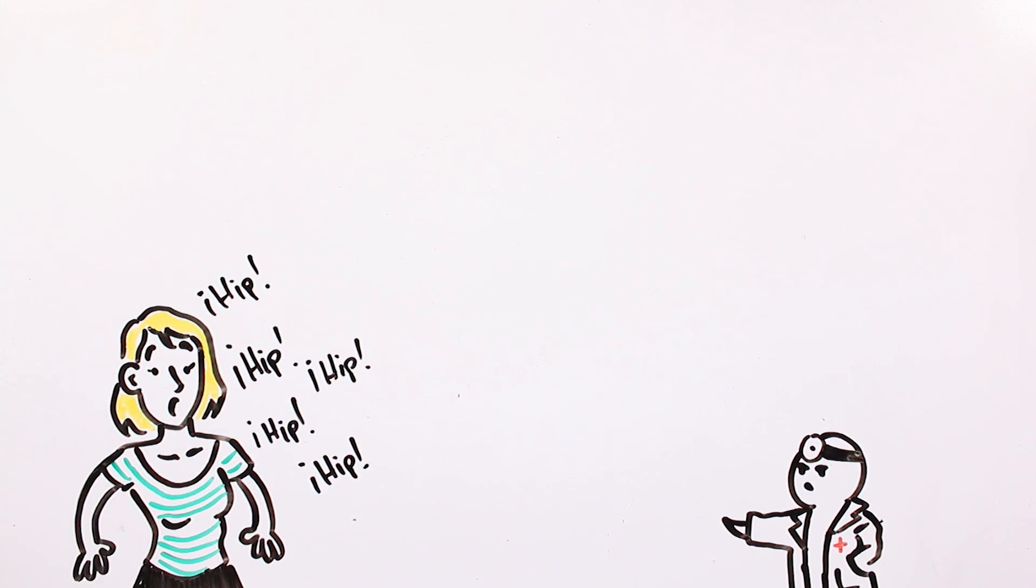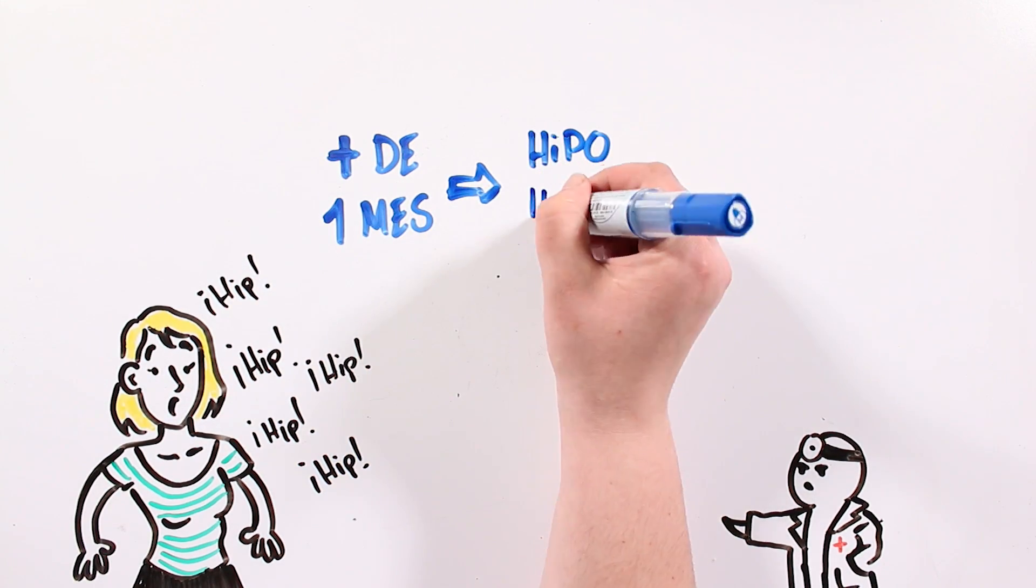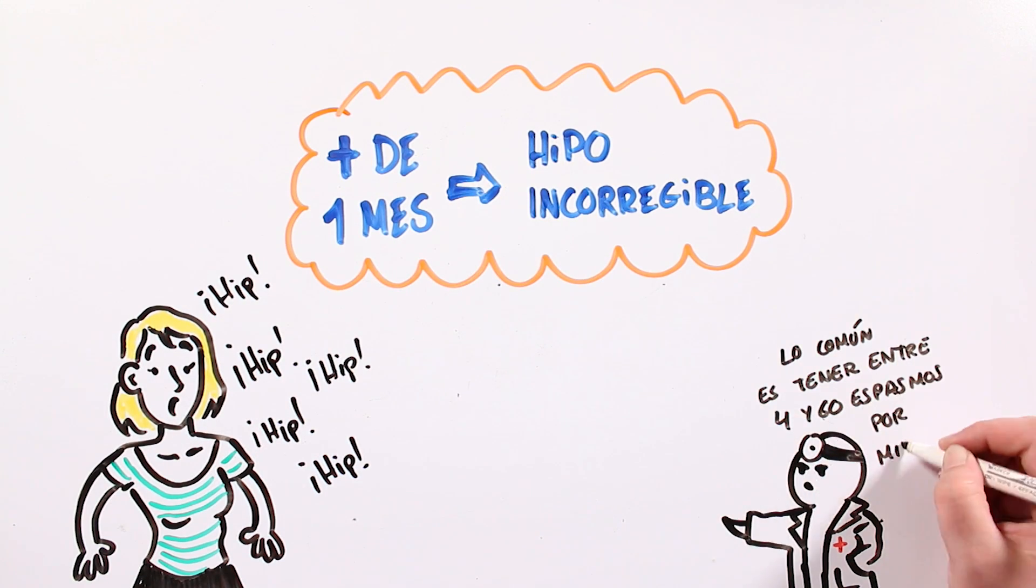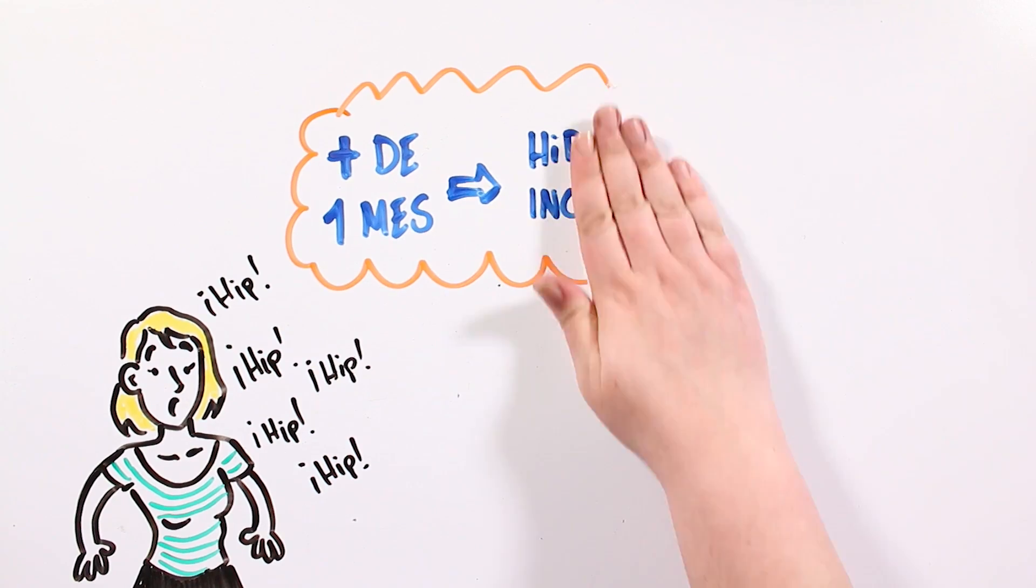If it lasts for more than a month, it is called incorrigible hiccup, and it usually has to do with problems in the central nervous system, mental health or the metabolism.